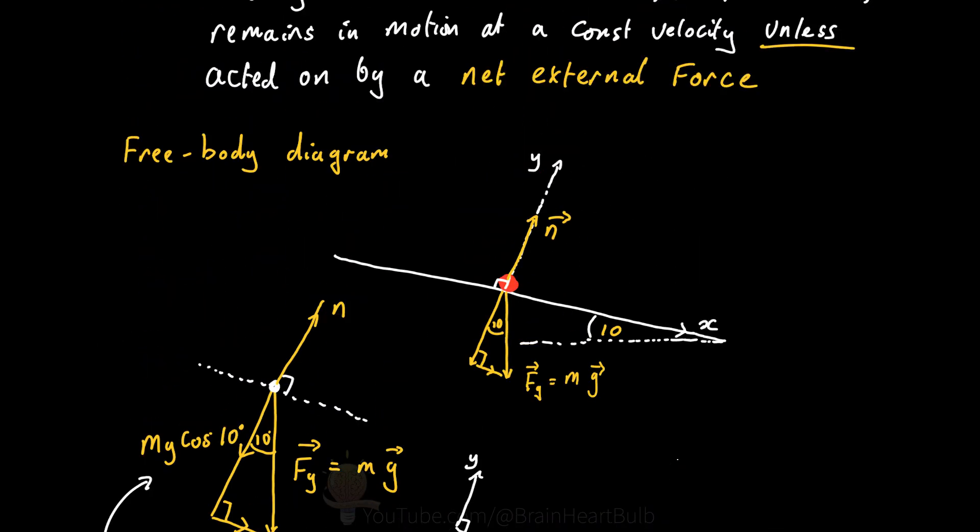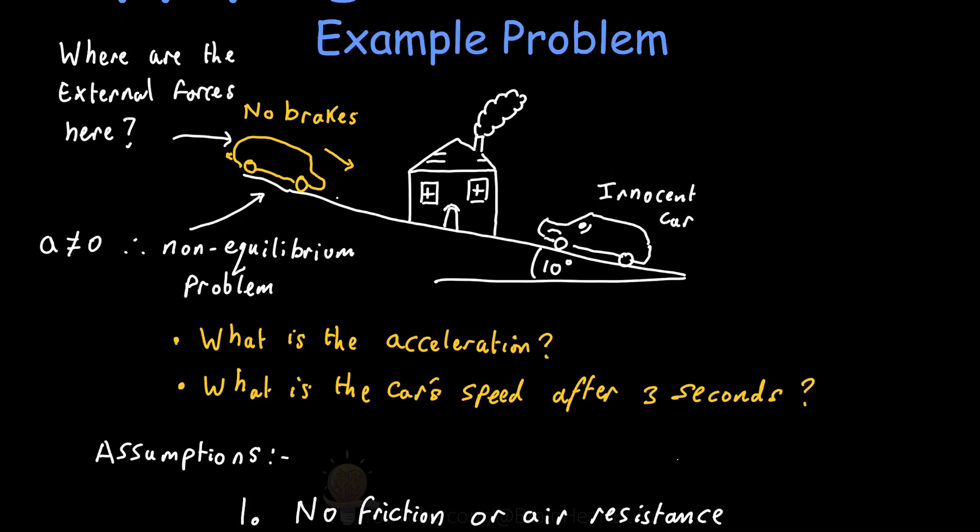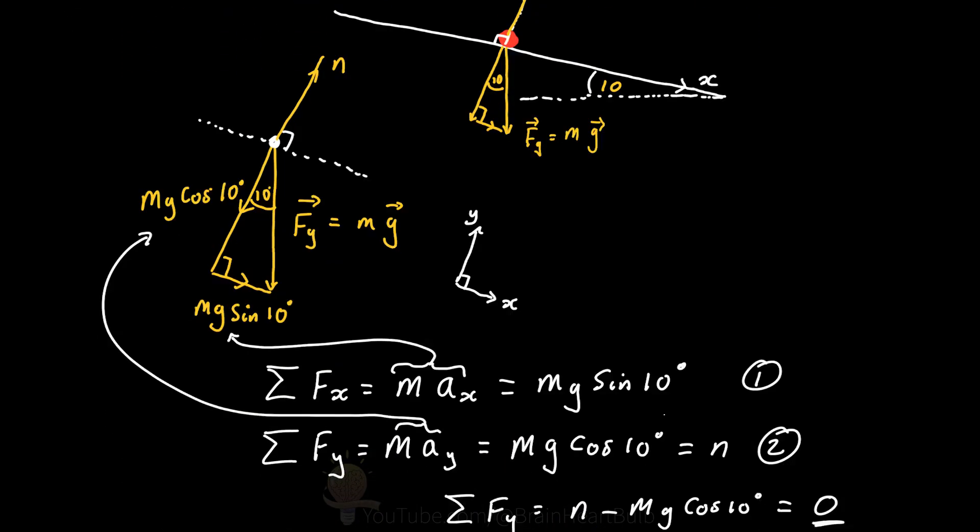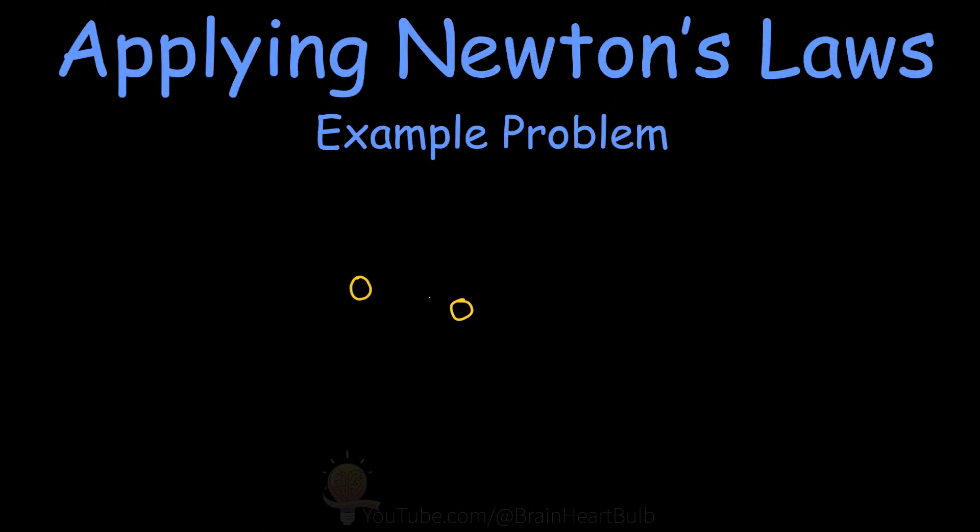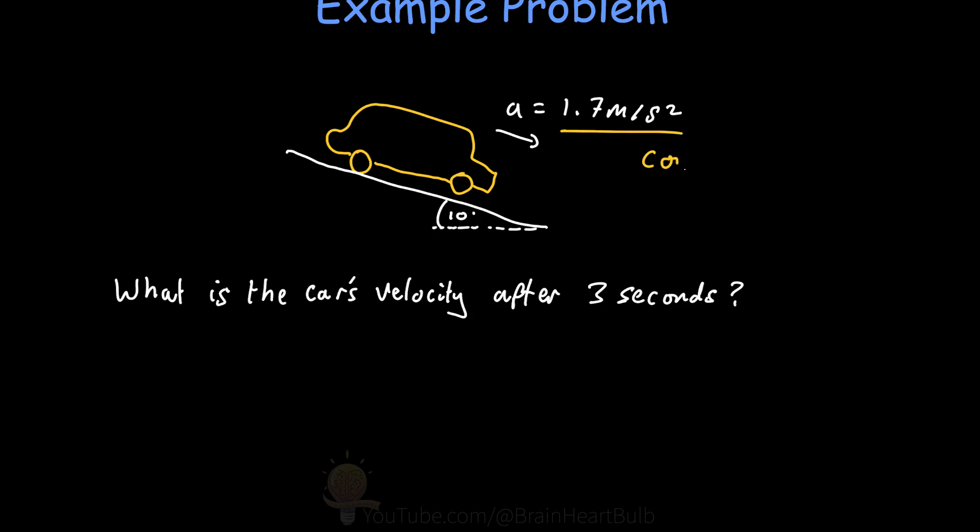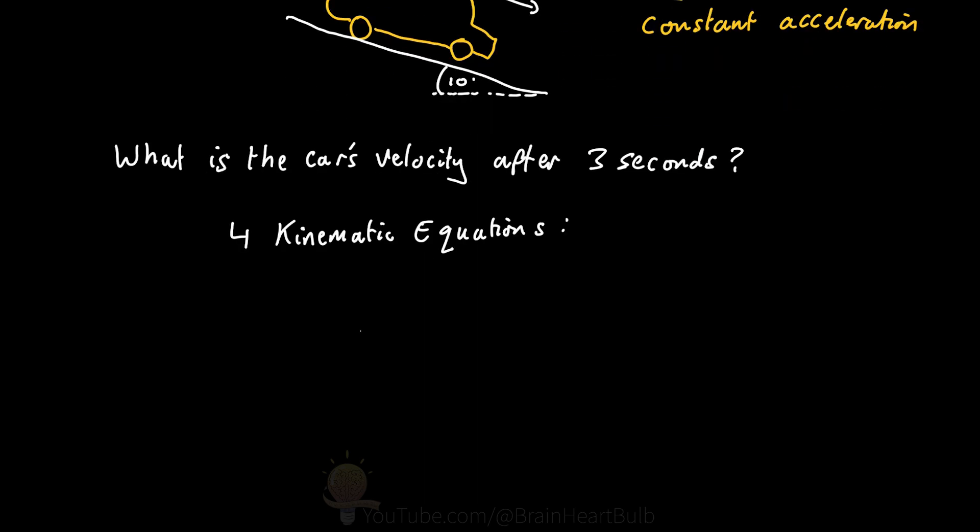Okay, so how about the car's speed after three seconds? Now we have a constant acceleration here, and a problem that is one-dimensional. So we can fairly easily apply the one-dimensional equations of kinematics to solve this problem. And the four kinematic equations can be written like this, and you may have seen them in a slightly different form, but they still work the same.